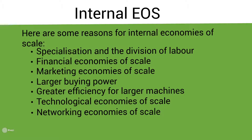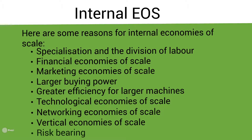We can also have vertical economies of scale. As a firm grows, there is a greater opportunity to buy firms that are either above or below them in the supply chain. For example, a paper-producing company may choose to buy a company that provides the trees, or a company that sells paper to end users such as Staples. The final example of internal economies of scale is risk-bearing.